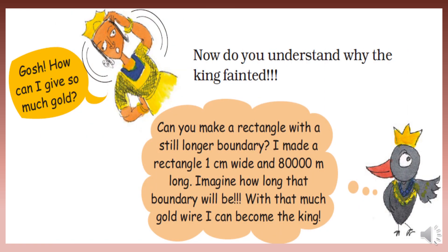The king thought: Gosh, how can I give so much gold! Now do you understand why the king fainted? You can make a rectangle with an even longer boundary — one centimeter wide and 80,000 meters long. Imagine how long that boundary would be! With that much gold wire I could become the king!